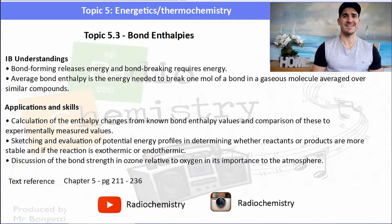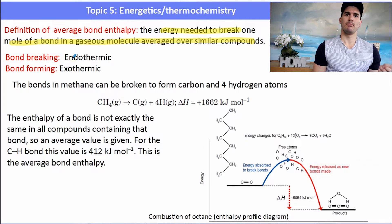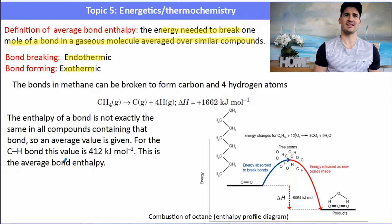The definition of a bond enthalpy is the energy needed to break one mole of a bond in a gaseous molecule, averaged over a number of similar compounds. Bond breaking is an endothermic process and bond forming is an exothermic process. For example, one methane molecule can be broken into one carbon atom in the gaseous phase and four hydrogen atoms in the gaseous phase. The C–H bond enthalpy is given a value of 412 kJ/mol because it has been averaged over a number of different compounds.